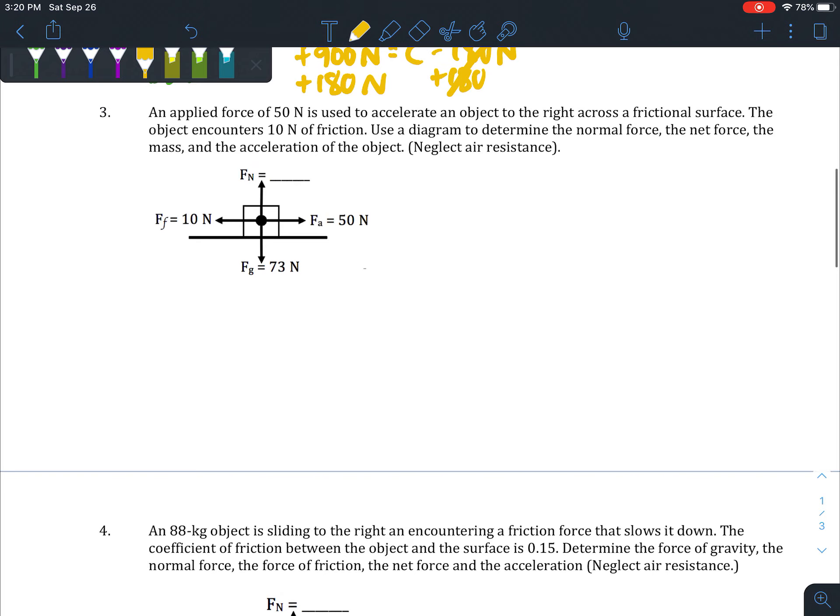Number three says we have an applied force of 50 newtons to the right, accelerating an object to the right across a frictional surface. Our object is moving to the right, and there's also friction—they tell us it's 10 newtons, so that's where the arrow to the left comes from. It's asking us to solve for normal force, net force, mass, and acceleration—basically everything we can about this problem.